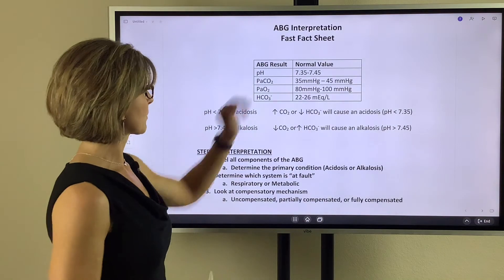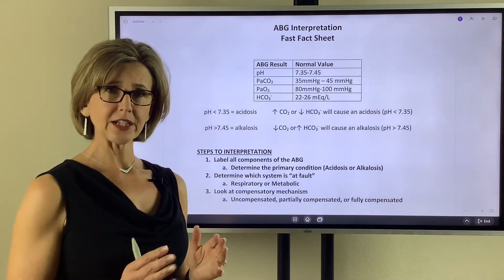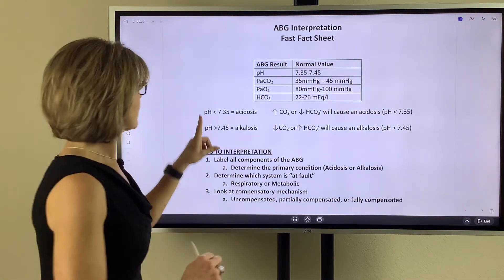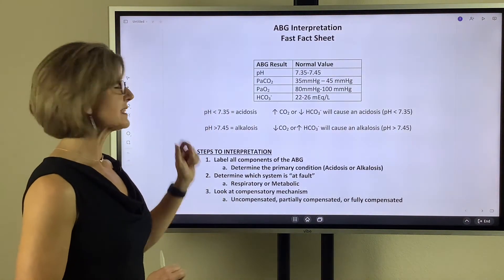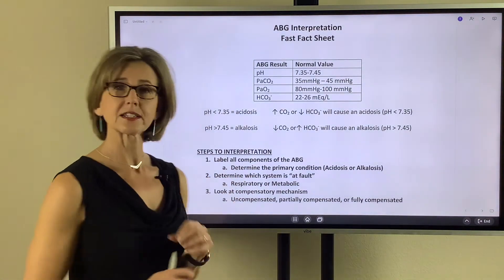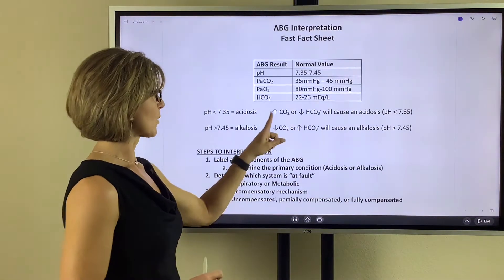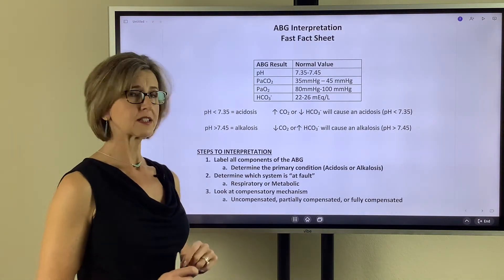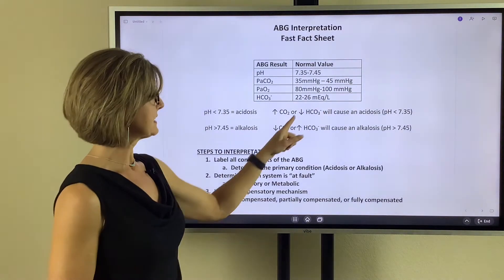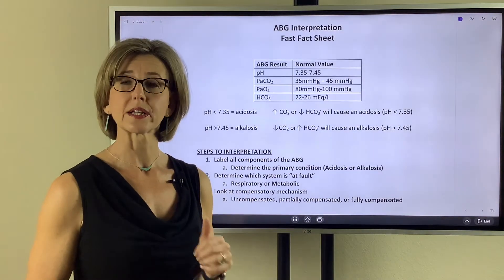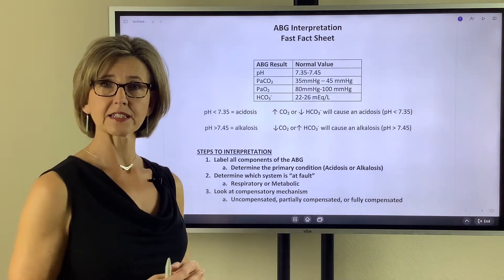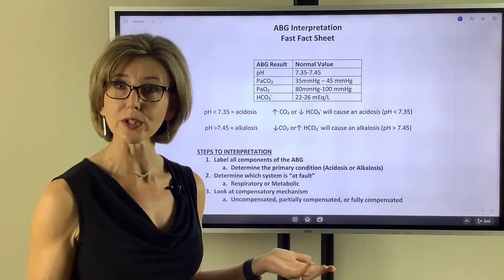Once you have those memorized, we also need to understand the relationship of CO2 and bicarbonate on the pH. A pH less than 7.35 is an acidosis. When we're looking at a blood gas, there are two things that cause an acidosis: a rise in CO2 above 45, or a decrease in bicarbonate below 22. Both of those conditions can cause an acidotic state — we just have to figure out which one is the cause.